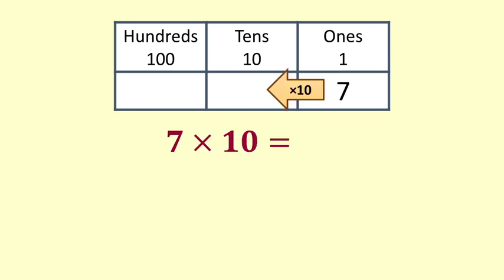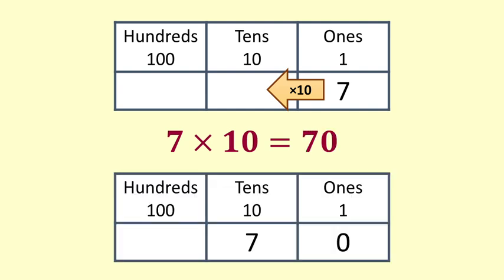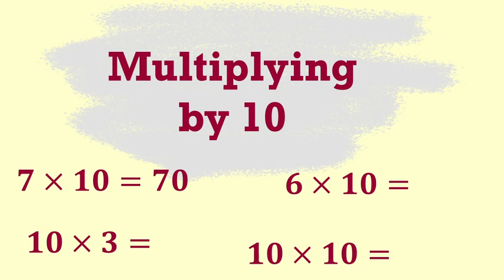When we multiply by 10 we move the entire number up one place. So 7 ones becomes 7 tens. The 0 is put in the ones place to show that there are no ones along with the 7 tens. 7 times 10 equals 70. 10 times 3 equals 30, 6 times 10 equals 60, and 10 times 10 equals 100.